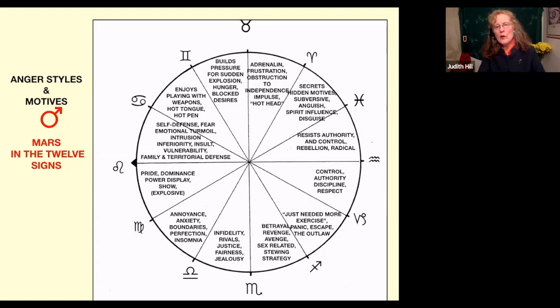Mars in Libra will get very angry over justice, honesty, someone lied to them, fairness issues. You ate my cake in the fridge, infidelity for sure, rivals, jealousy.